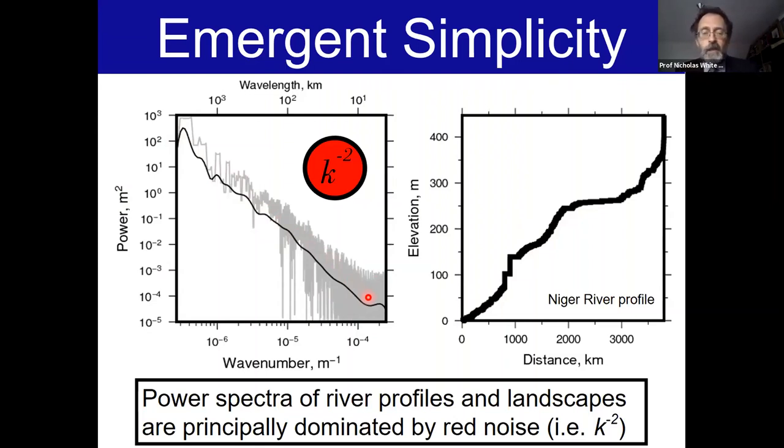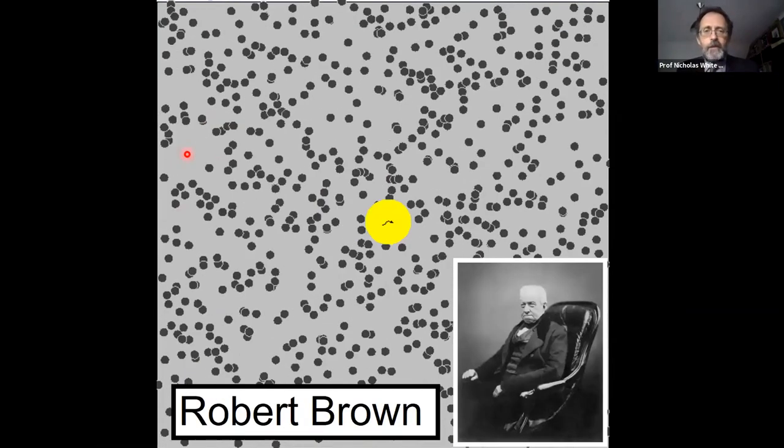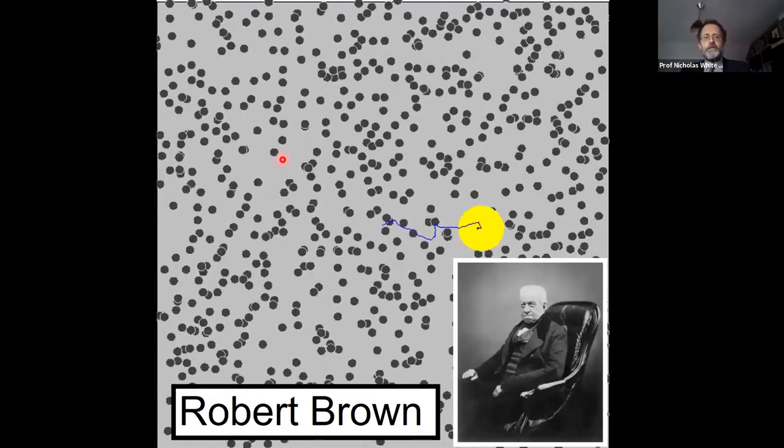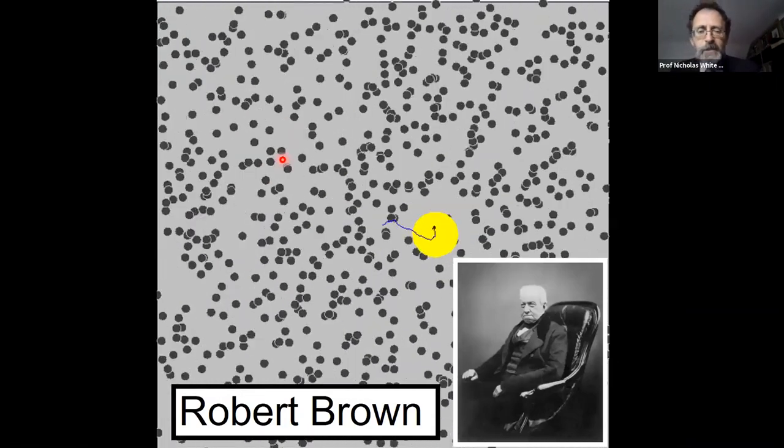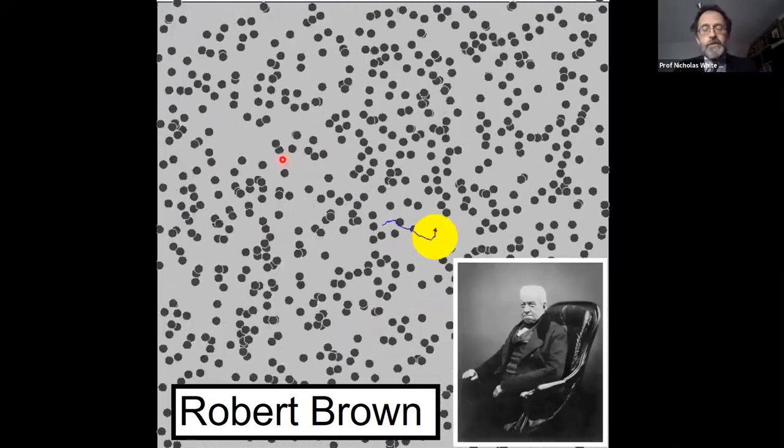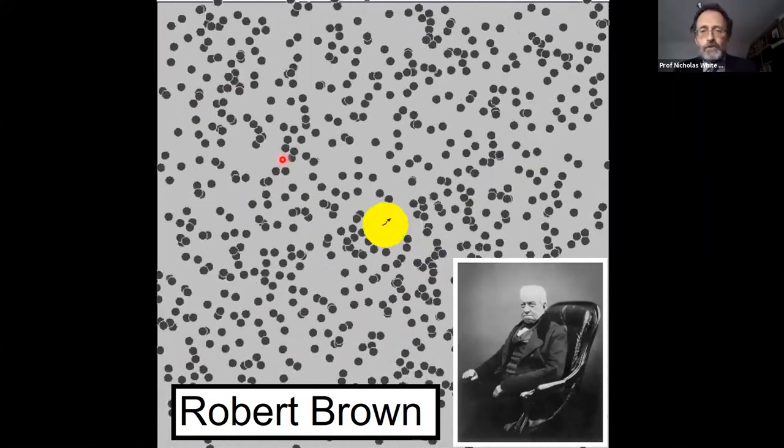That's illustrated in this picture. On the right, we have the river profile for the Niger. On the left, we have the power spectrum: the height of the river squared as a function of wave number. You can see this has a pretty tidy slope, and the slope is k to the minus two. You're looking at a red noise problem here. Most of the power resides at the longest wavelengths.